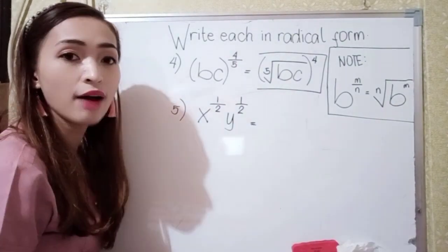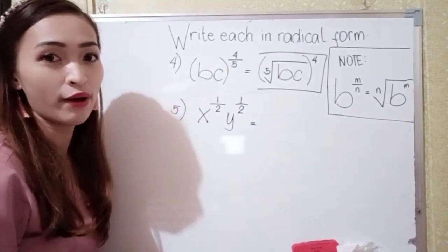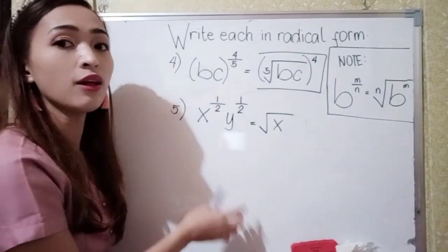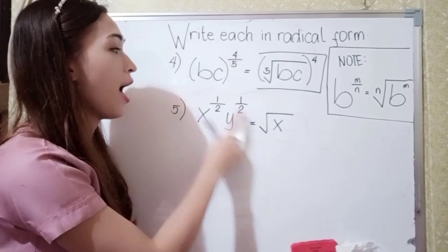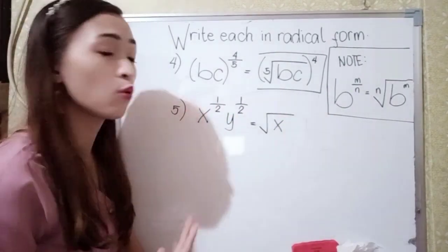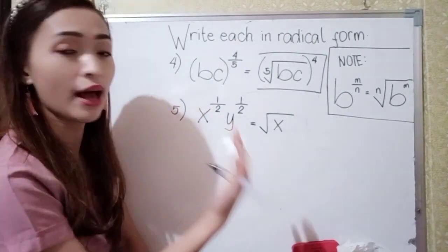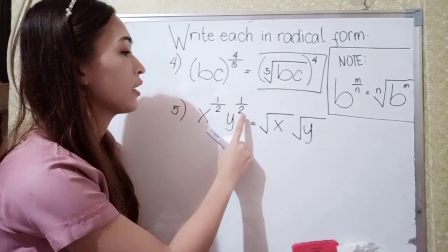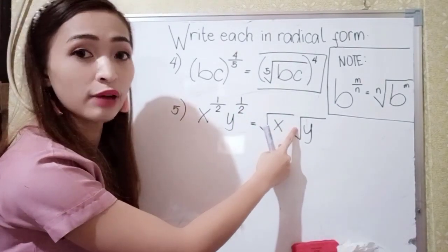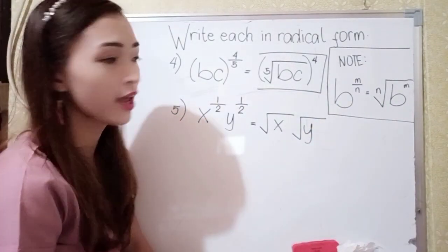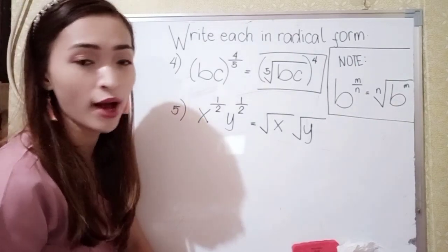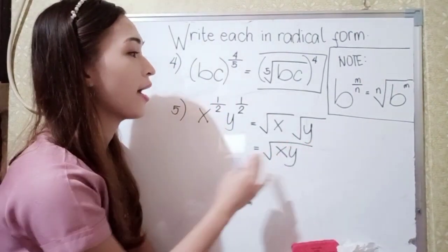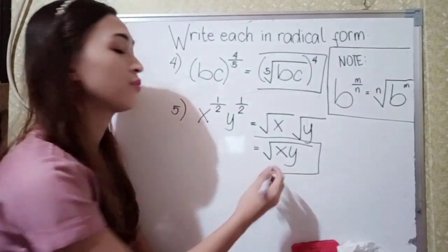For number 5, we have x raised to 1 half times y raised to 1 half. Since x is raised to 1 half, our radicand is x — we don't need to write 2 as the index or 1 as the exponent. Similarly, y raised to 1 half gives us the square root of y. We can simplify the square root of x times the square root of y into the square root of xy.